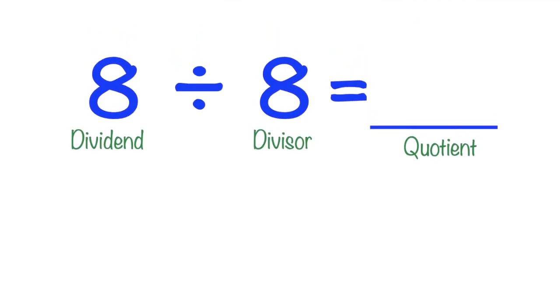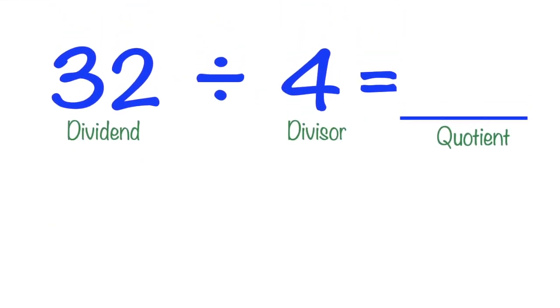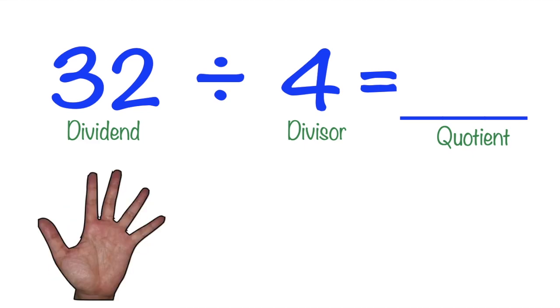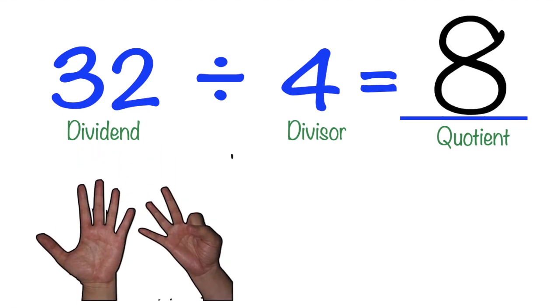How about 8 divided by 8 equals blank? Let's skip count by 8 until we reach 8 — 8! That is 1 only. Always remember, children, when you divide the same number, the answer is always 1. How about 32 divided by 4 equals blank? Let's skip count by 4 — 4, 8, 12, 16, 20, 24, 28, 32. The quotient is 8.